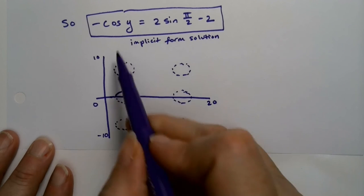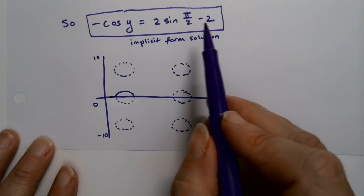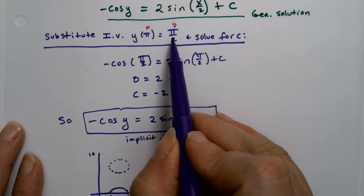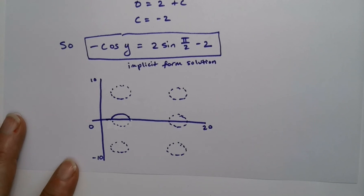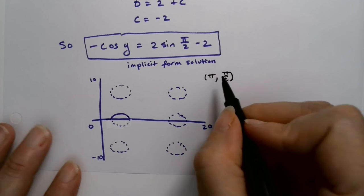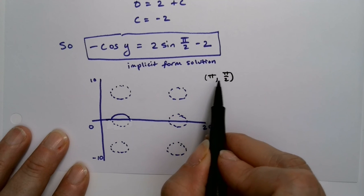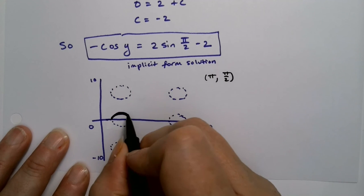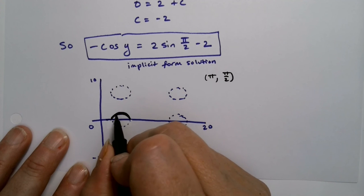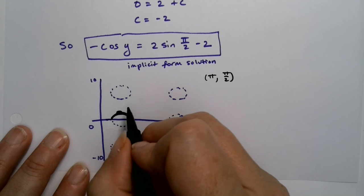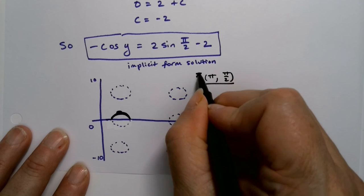Now, the trick is that this is all the solutions. However, they gave us an initial value of π and π over 2. So if I think about that point, if I think about the point π, π over 2, that would be at 3.14 and about 1.57, which means this solution is actually the one we're looking at. Because it's got the point 3.14 and 1.57 on it. It'd be right about there. Somewhere there. Star it right there.